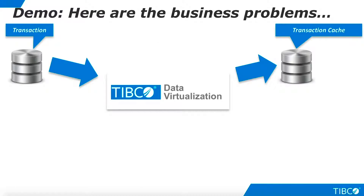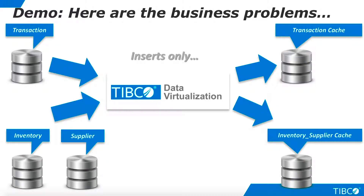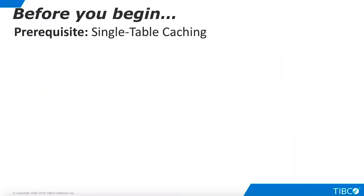Here is the business problem we illustrate in this demo. We examine two use cases. The first is very simple: we cache a table containing sales transactions. These transactions are immutable — they are never updated or deleted — so we only need to handle incremental caching for newly inserted rows. The second use case is more complex: we cache a federated view that joins data from two different databases, where inserts, updates, and deletes all occur.